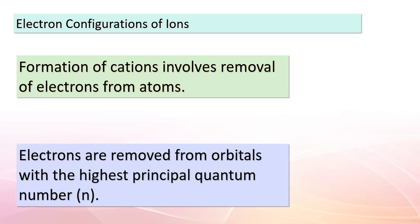Today, let's delve into the intriguing world of electron configurations of ions. When we talk about ions, we're discussing atoms that have gained or lost electrons. Specifically, when forming cations — which are positively charged ions — electrons are removed from the atom.